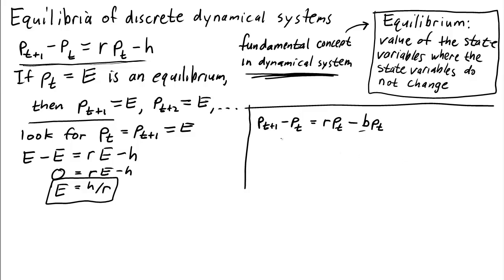What does an equilibrium mean? We need some value e that we're going to substitute for all the state variables. We'll plug that in here, and when we do that, we again get e minus e on the left-hand side, equals r times e minus b times e.